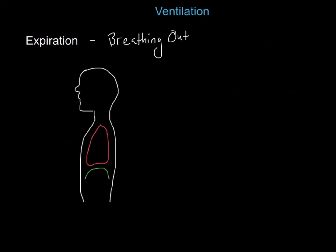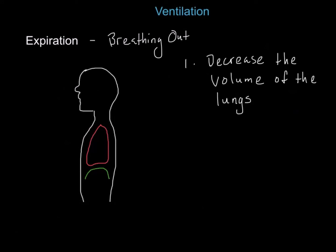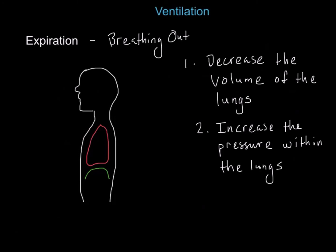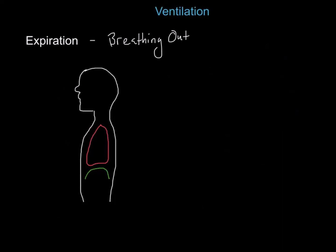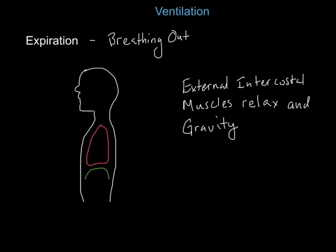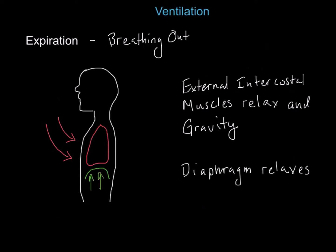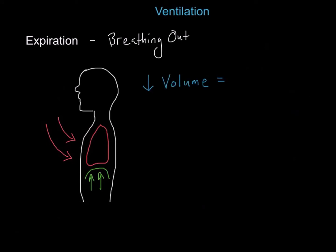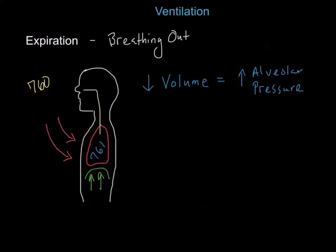Expiration is the process of breathing out. In order to breathe out, you must decrease the volume of the lungs, which increases the pressure within the lungs above 760 millimeters of mercury. To decrease the volume, the external intercostal muscles relax and gravity pulls the rib cage down and in. Also, the diaphragm relaxes, allowing the lungs to return to their original shape. Decreasing the volume of the lungs increases the alveolar pressure to about 761 millimeters of mercury. Since alveolar pressure is greater than atmospheric pressure, air moves out of the lungs.